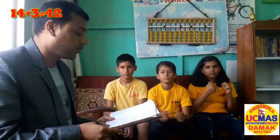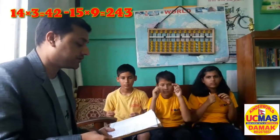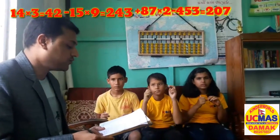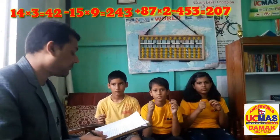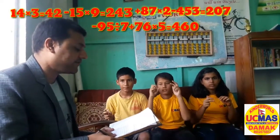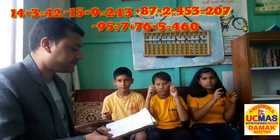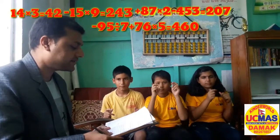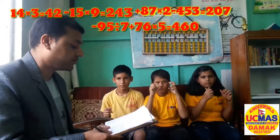14 times 3 equals 42, minus 15 times 9 equals 243, plus 87 times 2 minus 453 equals 207, minus 95 divide by 7 plus 76 times 5 equals to...